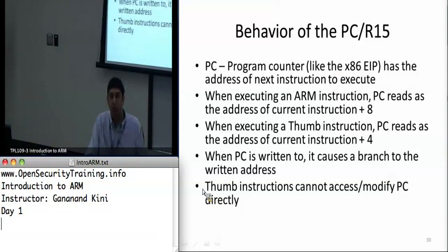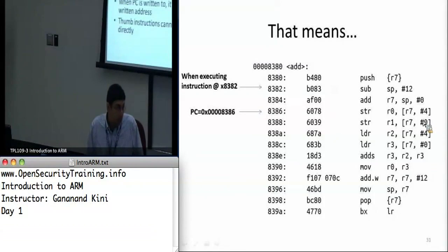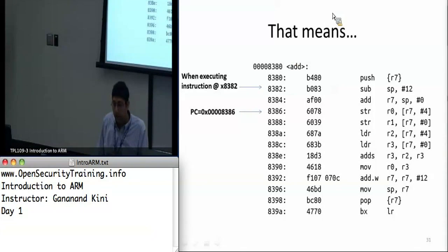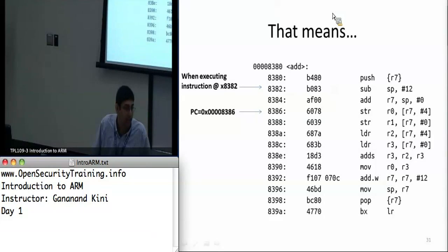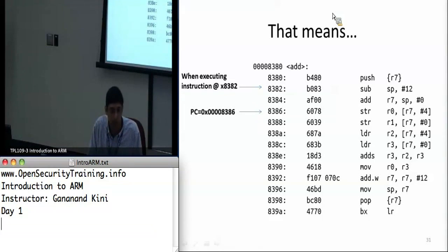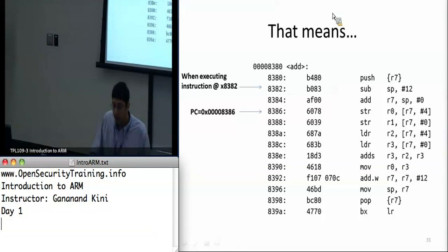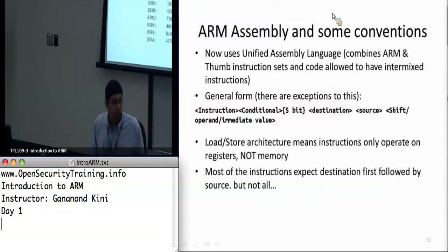Keep this in mind: in thumb mode, if you're executing an instruction at address 0x8382, the PC will actually be pointing to 0x8386. We'll see this in an example later and again in the interrupts lab, where whenever interrupts occur this PC offset becomes very important.